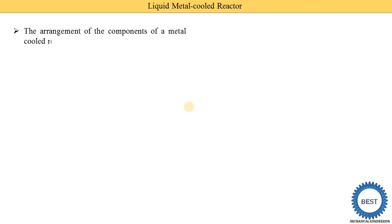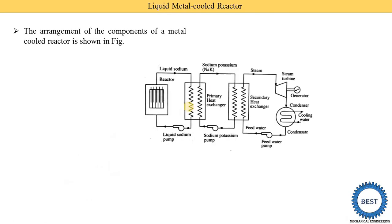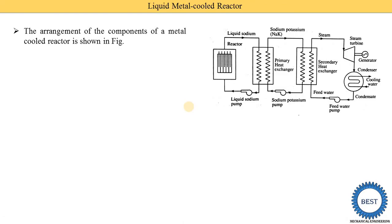The arrangement of components of a liquid metal cooled reactor is shown in this figure. There are three parts: the primary circuit, the secondary circuit, and the final circuit which is the steam generation section.